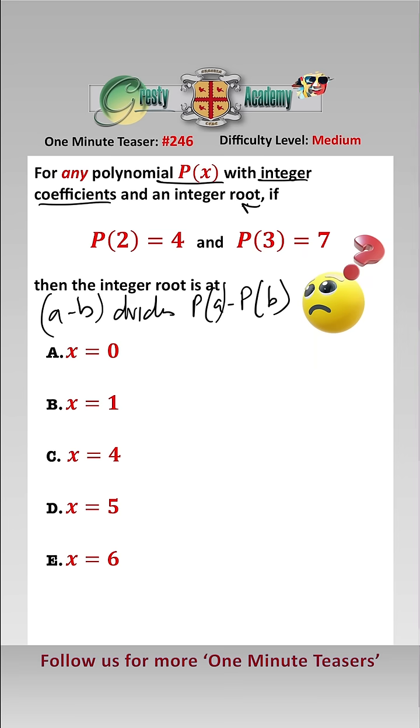Let's call the root that we require x equals r, and that's an integer, so we know that P of r equals 0 as it's a root. Therefore, we know that 2 minus r divides P of